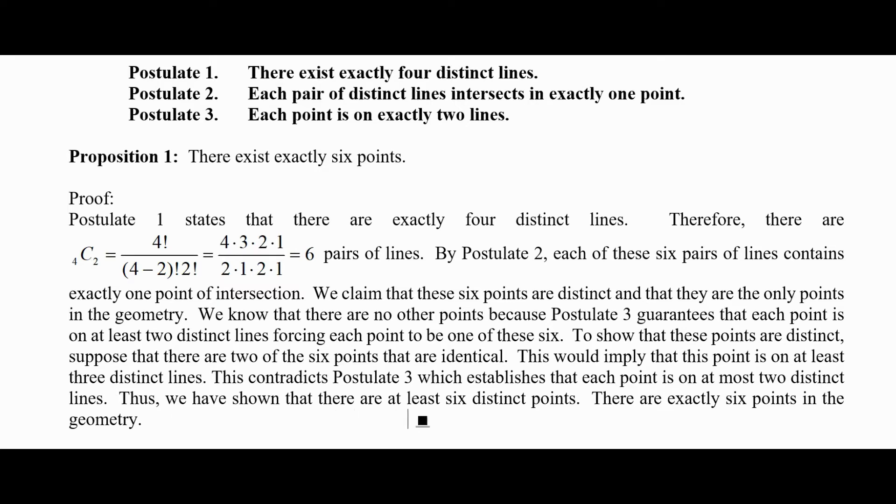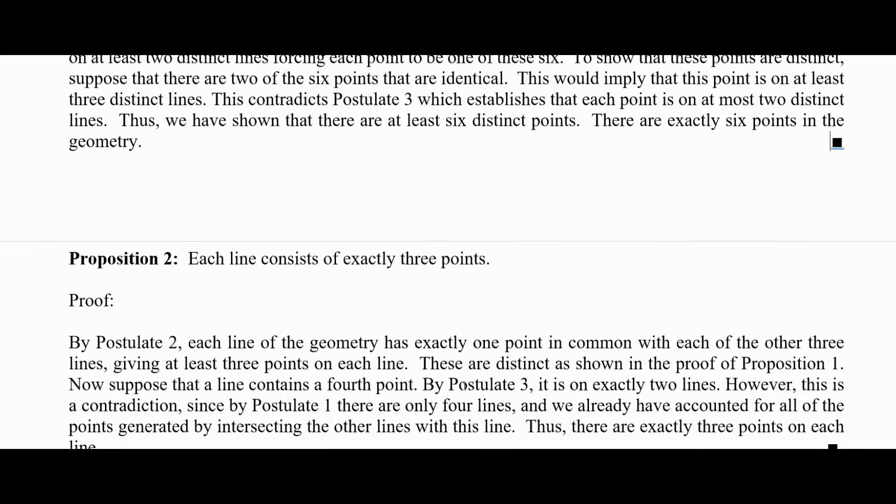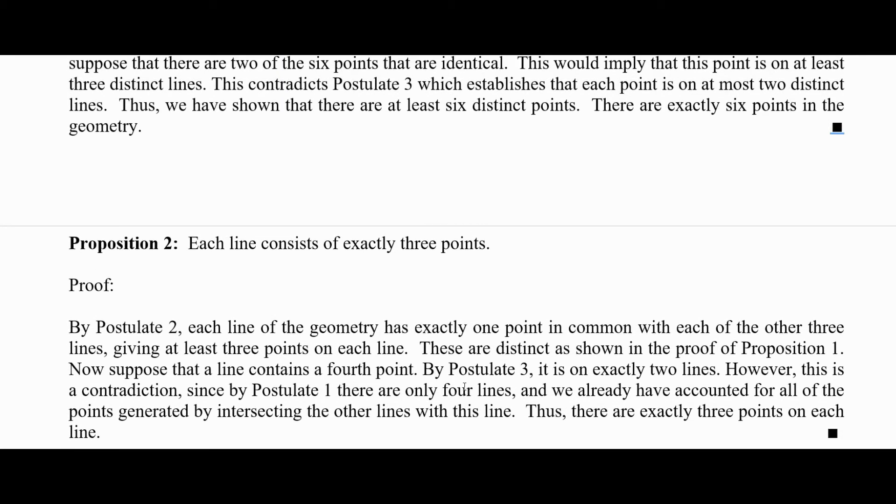Okay, now let's look at the next theorem or proposition. Each line consists of exactly three points. Here's the proof. By postulate two, each line of the geometry has exactly one point in common with each of the other three lines, giving at least three points on each line. These are distinct as shown in the proof of proposition one.